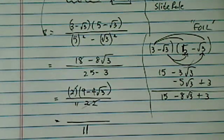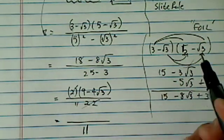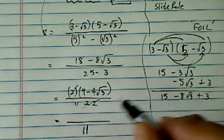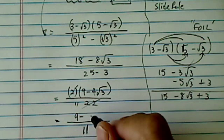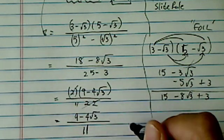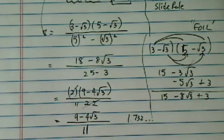See, isn't that prettier, 11? Better than 5 plus radical 3. And radical 3 is not a pretty number. Radical 3 in decimal form is 1.732, so on and so forth.